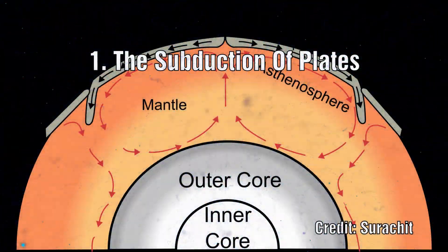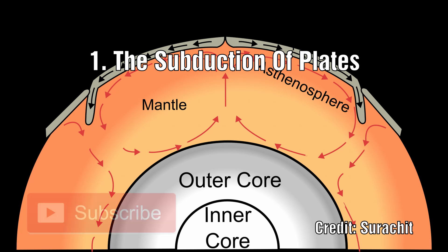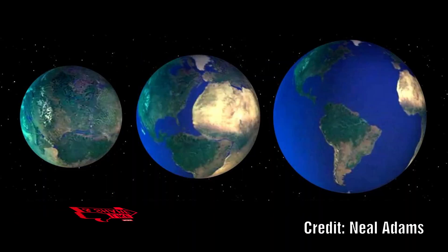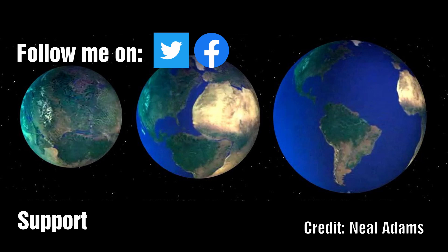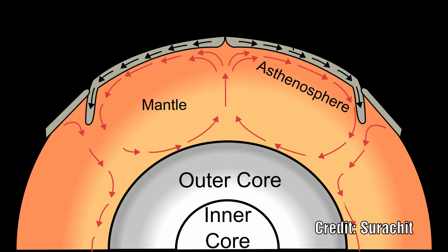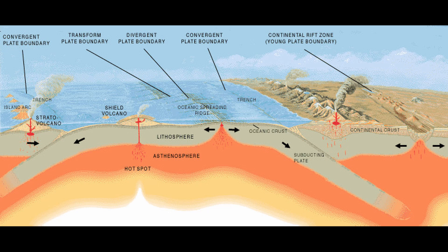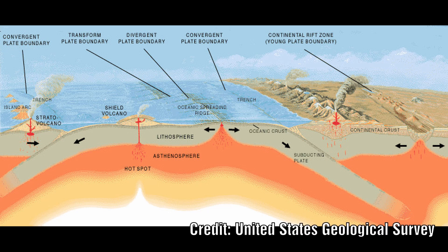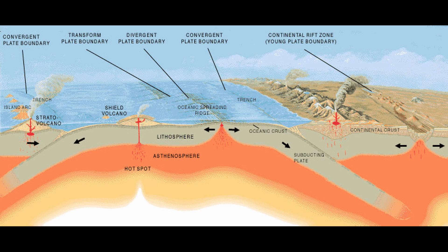Problem 1: The subduction of plates. There are many different versions of the expanding Earth model and one of the main differences between them is whether they accept or reject the concept of subduction. It is clear however that they are both at odds with the concept of subduction put forward by plate tectonics. The main differences come down to how far down this subduction continues. Plate tectonics would have this going on for thousands of kilometers, which cannot really occur.